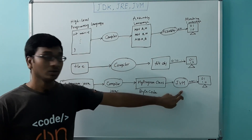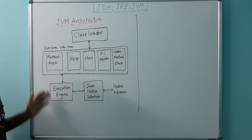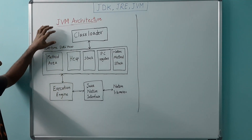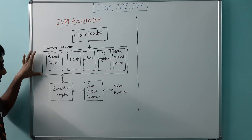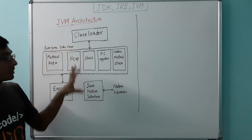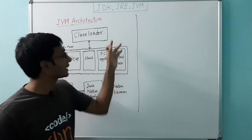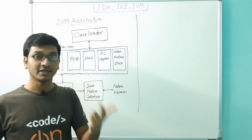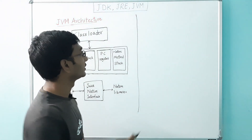Now let us discuss about JVM architecture. You can see here we have three components in it: class loader, runtime data areas, and execution engine. Let's discuss one by one. Let's start with the class loader first. The class loader has three phases: loading, linking, and initialization. First let's discuss the loading phase.